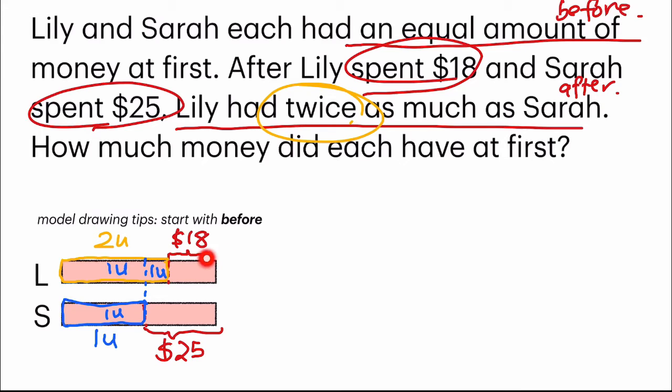Then what's next? Looking at the model, that 1 little unit is actually the difference of 25 and 18, is equal to this portion. So that helps us with the first step. To find 1 unit is 25 minus 18, which gives us 7.